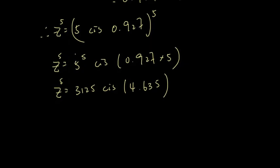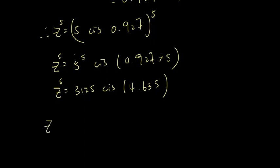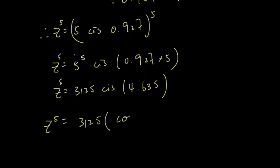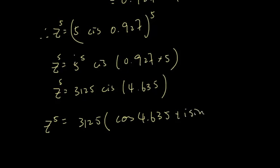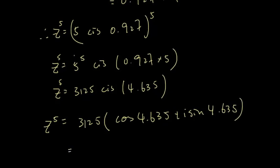Now if we need to put it back into rectangular form, that is 3125(cos 4.635 + i sin 4.635), which equals approximately −241.60 − 3115.65i.